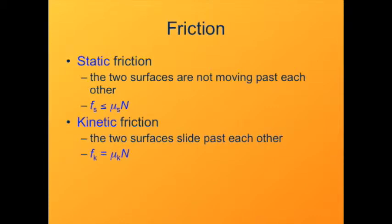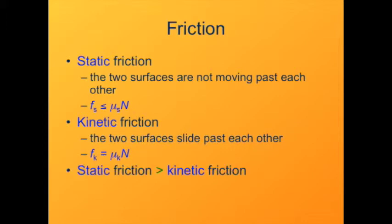The other type of friction is kinetic friction. This is when the surfaces are moving past each other — they're sliding. In that case, the force of friction is modeled by mu sub k, k meaning kinetic friction, and the magnitude of the frictional force is just the coefficient times the normal force. The force of static friction between two surfaces is larger than the force of kinetic friction between the same two surfaces.